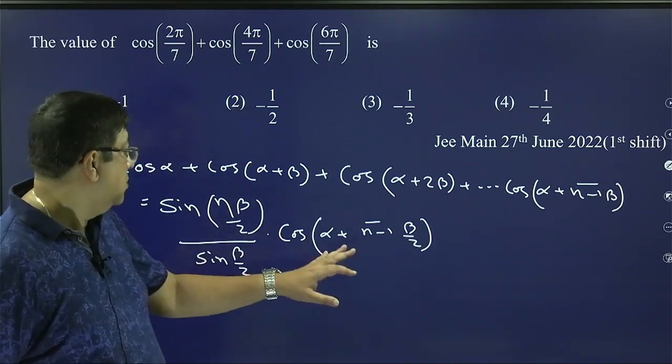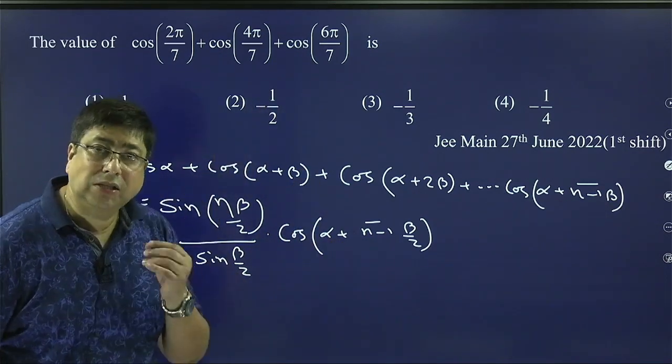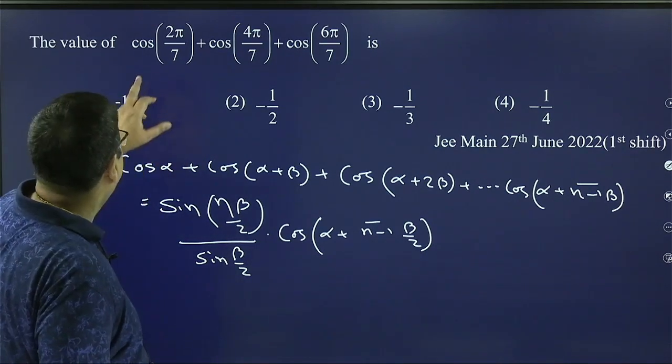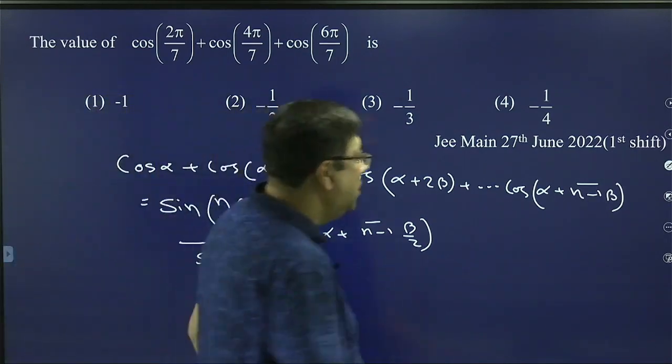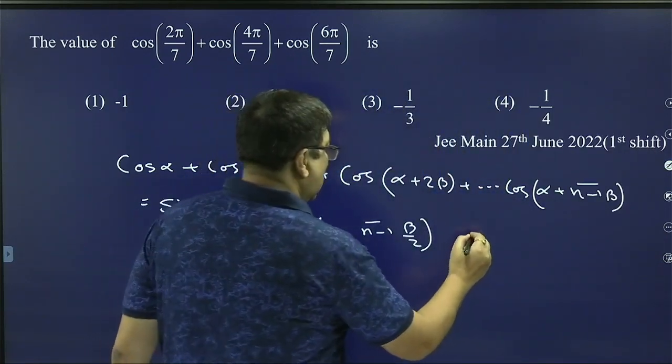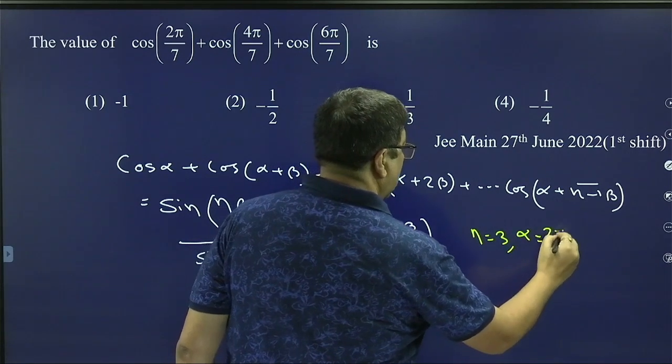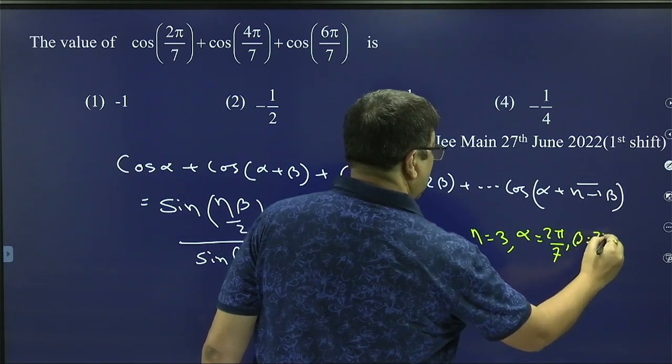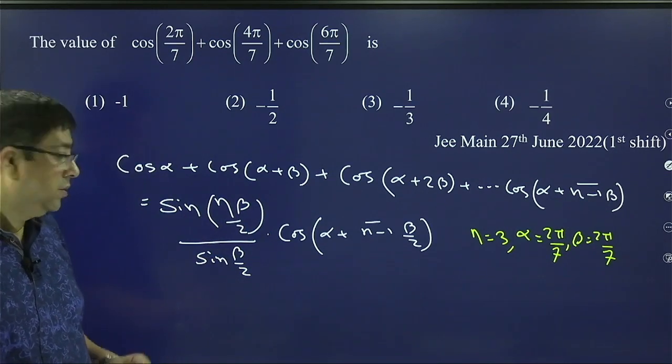So everyone, this is a series and we have to keep in mind, using this series we can solve this sum in just two, three lines. Let's see. Let us apply. In this case, if we compare, there are three terms. Here n = 3. So in this case, n = 3, α = 2π/7, and β is also 2π/7. So let us apply this. I am applying this. Just see.